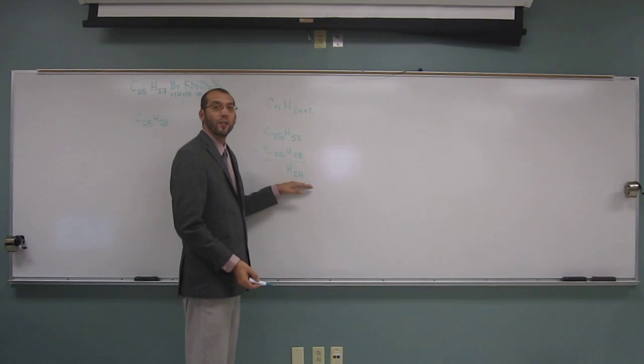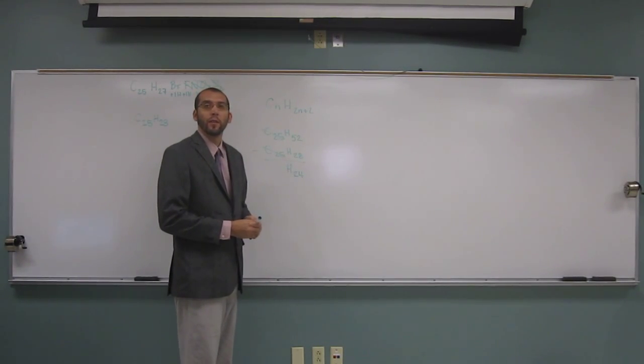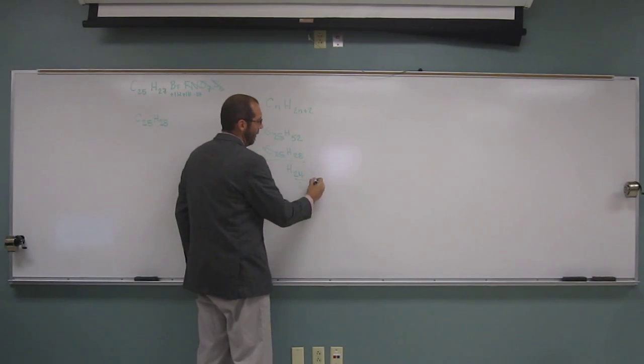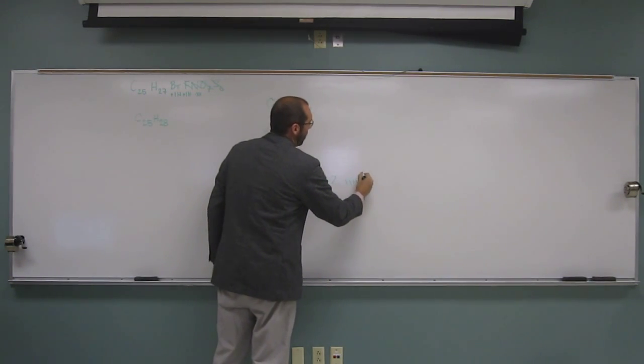So since we're missing 24 hydrogens, how many units of unsaturation do we have? 12. 12, okay? So just take that, if you want to, and divide it by 2, and that equals 12 units.